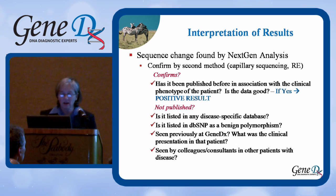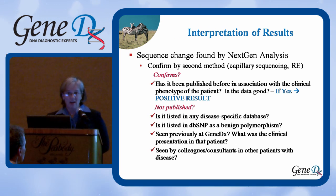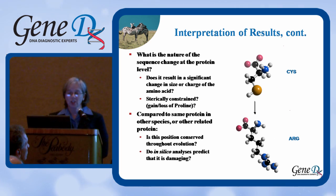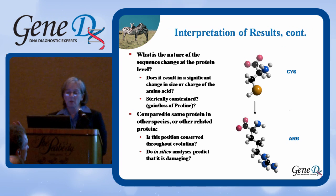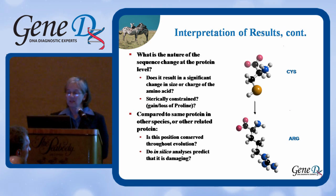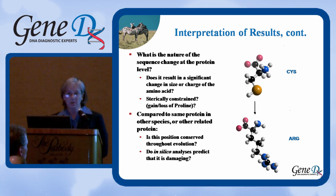We talk to a lot of our colleagues and consultants — many of them are here, and we appreciate their assistance whenever we have cases like this. We look at the actual change at the protein level. Does this change result in a big change in amino acid size or charge? For example, here you have a cysteine to arginine change, and that big yellow ball is a sulfur ion. You can tell there's a huge difference between what cysteine looks like and arginine looks like, and that's going to have a major impact on the protein's secondary structure or its ability to interact with other proteins.